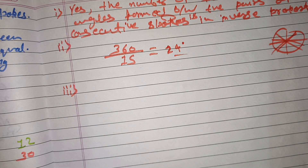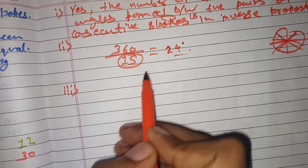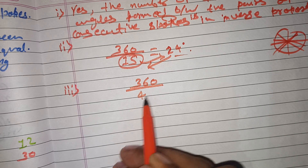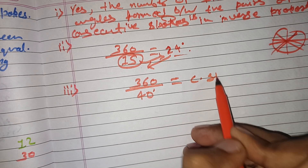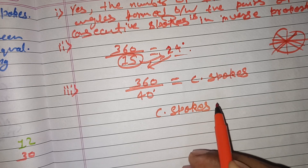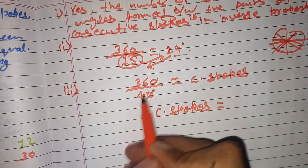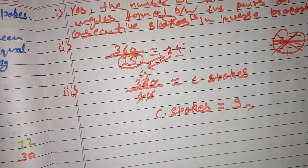Part three: how many spokes would be needed if the angle between a pair of consecutive spokes is 40 degrees? Here the angle is given and we need to find the number of spokes. So 360 divided by 40 gives 9. Therefore, 9 spokes are needed. If you want to keep a 40-degree angle between consecutive spokes, then 9 spokes will be required.